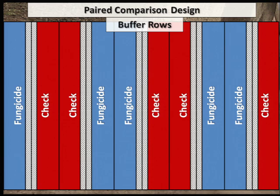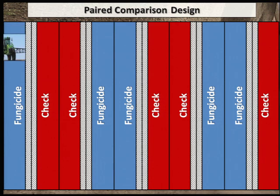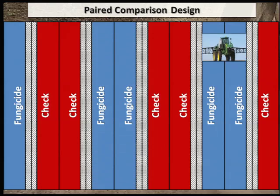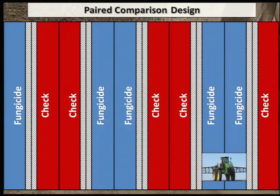You would harvest these center rows separately, collecting data from them for your records. The buffer rows would be harvested separately outside this research project. In our example, we are spraying a fungicide, and we'll need buffer rows to ensure that any fungicide drift occurs primarily on the buffer rows and not in the check strips.